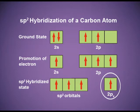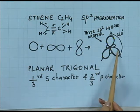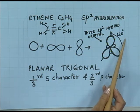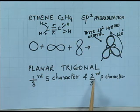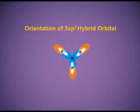In ethene, SP2 hybridization occurs: one S and two P orbitals intermix, while one P orbital remains unhybridized. The two P orbitals hybridize to give three SP2 hybrid orbitals, which orient themselves in a trigonal planar shape with a bond angle of 120 degrees. These three SP2 hybrid orbitals have one-third S character and two-thirds P character.